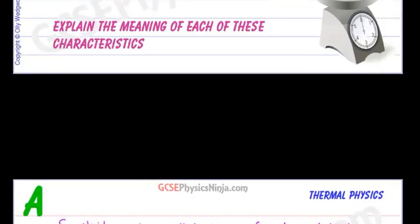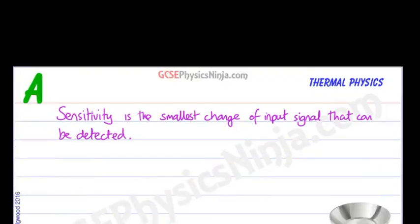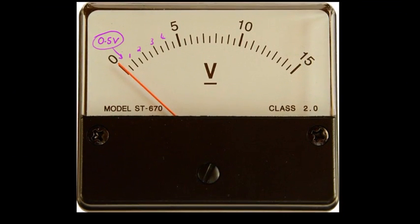What about range? What is the range of a measuring instrument? Well, the range is simply the smallest amount that it can measure to the largest amount. And so we would say the range of this voltmeter would be 0 to 15 volts. Easy as that.